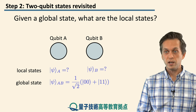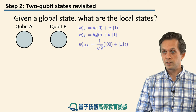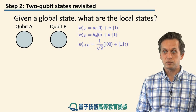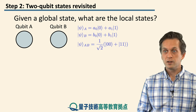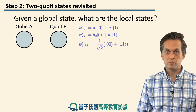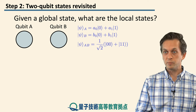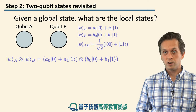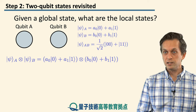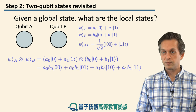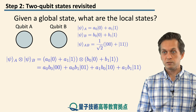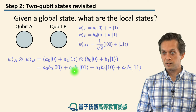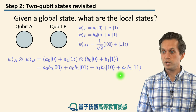So what are the local states of qubit A and qubit B? We can write a general state of qubit A as a superposition of |0⟩ and |1⟩ with probability amplitudes A0 and A1, and same for qubit B where the probability amplitudes for state |0⟩ is B0 and for state |1⟩ is B1. The global state we are looking for is |0,0⟩ + |1,1⟩. Forming the tensor product of psi A with psi B and expanding the brackets gives four terms: A0·B0 for |0,0⟩, A0·B1 for |0,1⟩, A1·B0 for |1,0⟩, and A1·B1 for |1,1⟩.